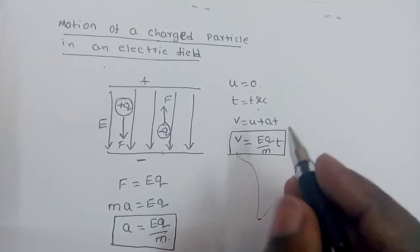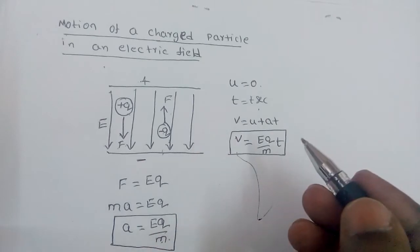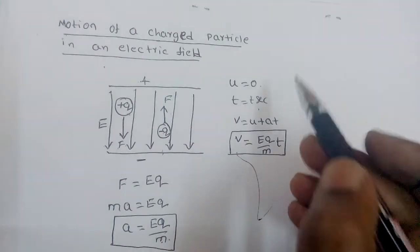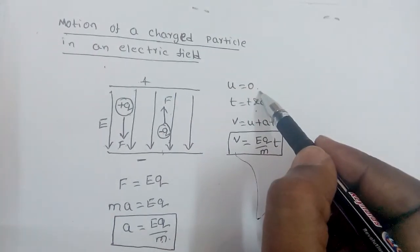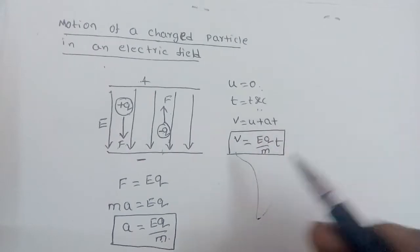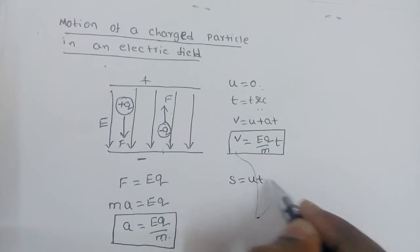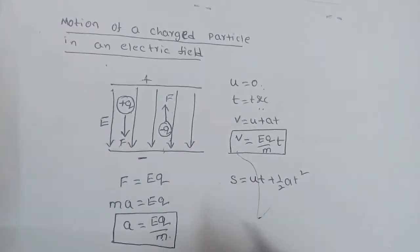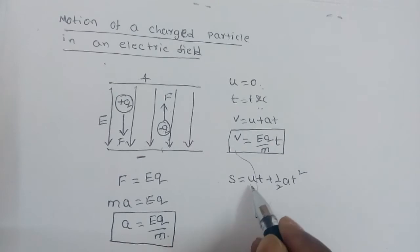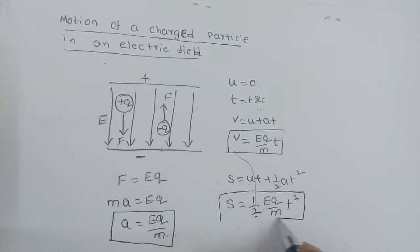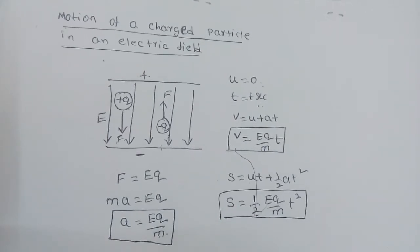Now, if we want to measure the displacement after t seconds — the distance covered by the charged particle in the electric field — since the particle is initially at rest, we use s = Ut + ½at². With initial velocity U = 0, the distance covered is s = ½ × (Eq/m) × t².